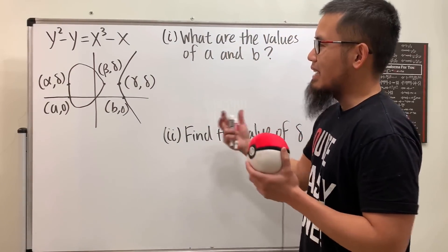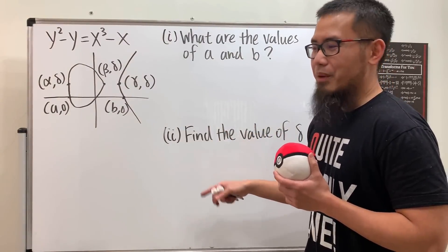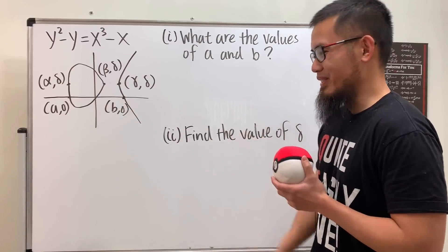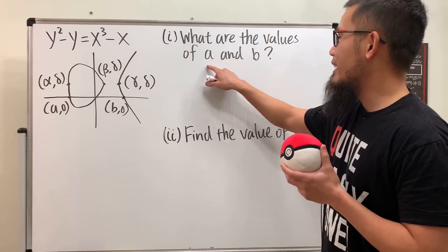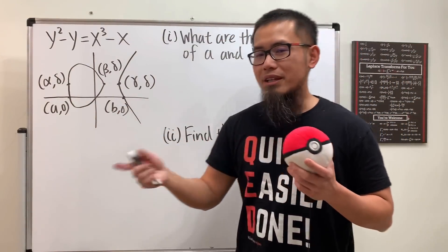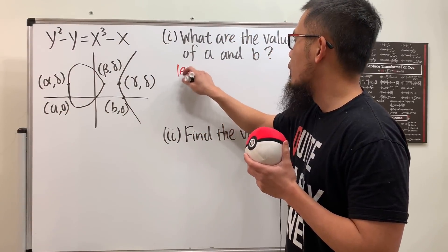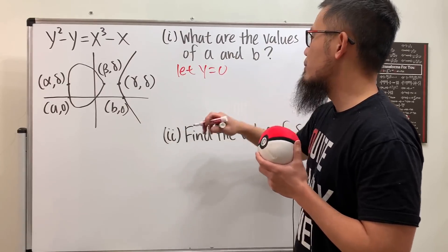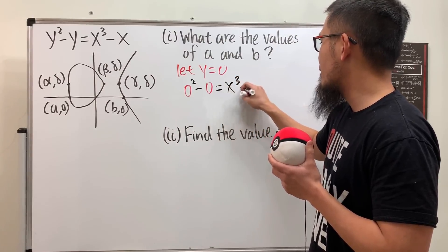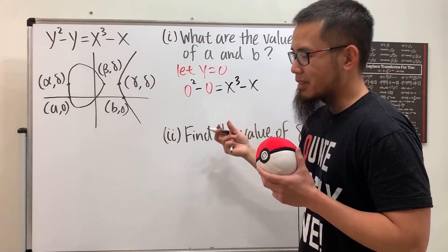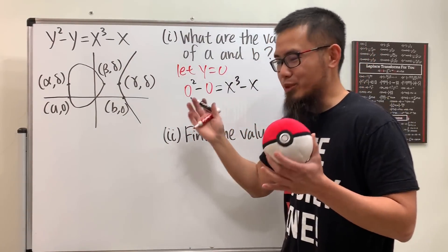For the first part we are going to find out the values of a and b, which are labeled on the x-axis. Since those points are on the x-axis, y = 0, so we get 0² - 0 = x³ - x. This first part of the question is pretty straightforward.